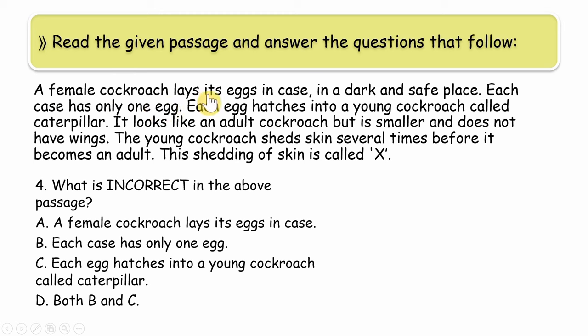Next question, fourth: A female cockroach lays its eggs in case, in a dark and safe place. Each case has only one egg. Each egg hatches into a young cockroach called caterpillar. It looks like an adult cockroach but is smaller and does not have wings. The young cockroach sheds skin several times before it becomes an adult. This shedding of skin is called molting.